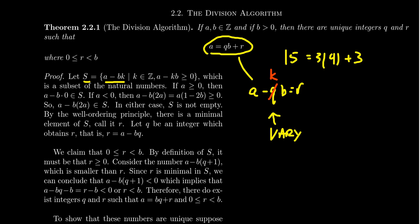We have to be careful and make sure this is a set of natural numbers. While K can be any possible integer, we restrict our choice of K so that A minus KB is greater than or equal to zero — a non-negative integer is a natural number after all. So S is going to be a subset of the natural numbers. But is S empty? If A is itself a non-negative number, notice that A minus zero times B — since A was non-negative — would be an allowed element inside our set S. So S would contain something.